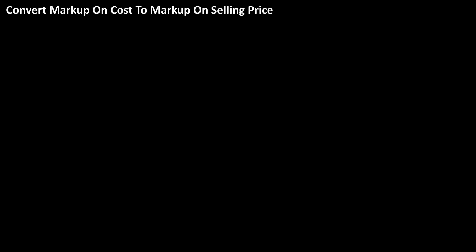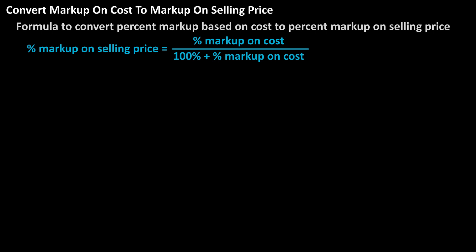The formula to convert percent markup on cost to percent markup on selling price is: percent markup on selling price equals the percent markup on cost divided by 100% plus the percent markup on cost.